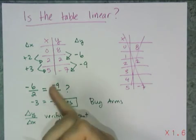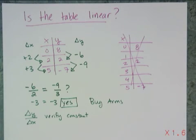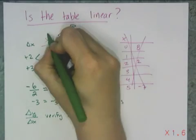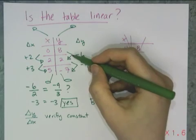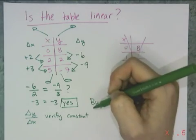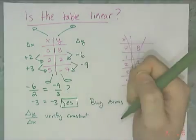Now the reason why I call this bug arms is because you can imagine little antennae coming out, and then little legs coming out, and it's like this angry bug has his hands on his hips. So that's why I call this bug arms.